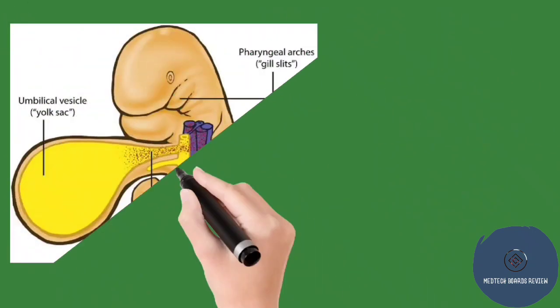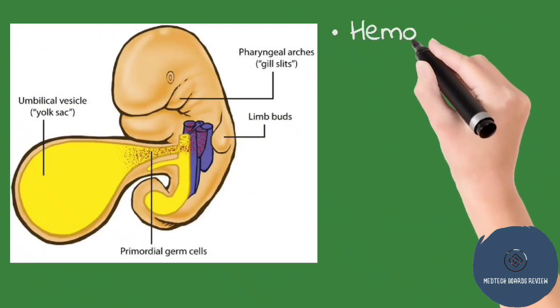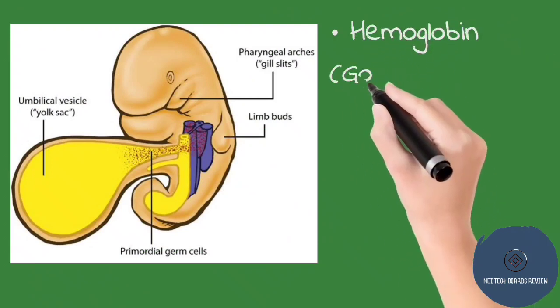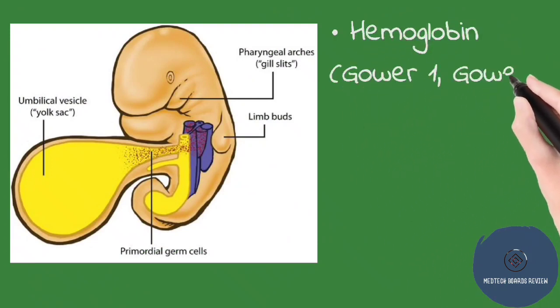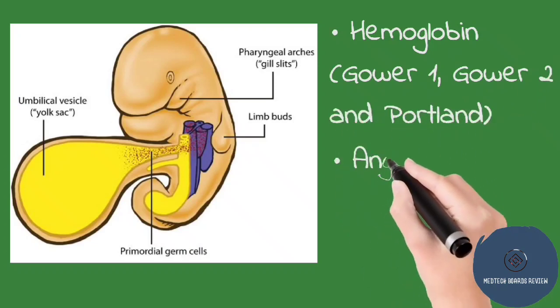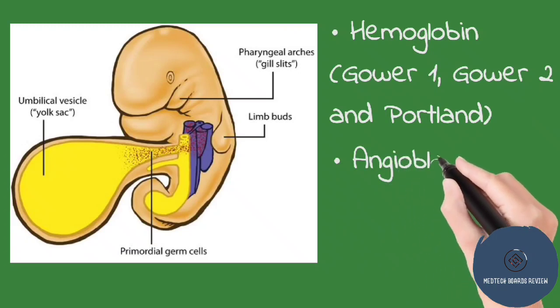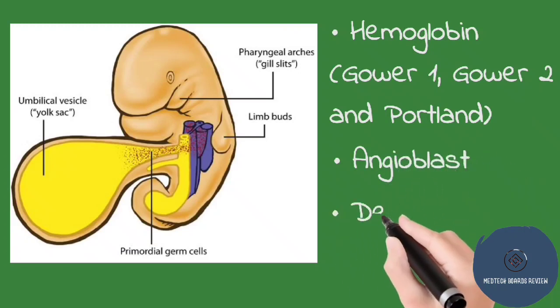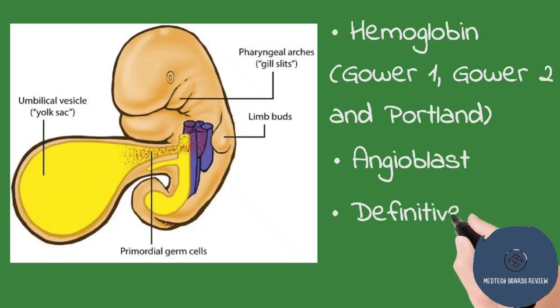What happens here is that cells from the mesoderm migrate towards the center cavity of the yolk sac. It forms hemoglobin, specifically Gower 1, Gower 2, and Portland, which supplies oxygen to the highly developing fetus. Some cells from mesoderm surround the yolk sac and later become blood vessels. These are called angioblasts. Later on, definitive hematopoietic stem cells will form.